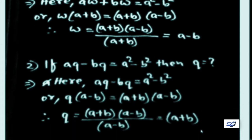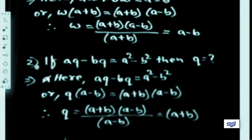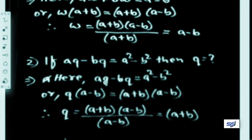Similarly, rule number two: if a·q minus b·q equals a squared minus b squared, then what is q? From this equation we have to find the value of q. Here, a·q minus b·q equals a squared minus b squared. Taking q as common gives q times (a minus b) on the left.